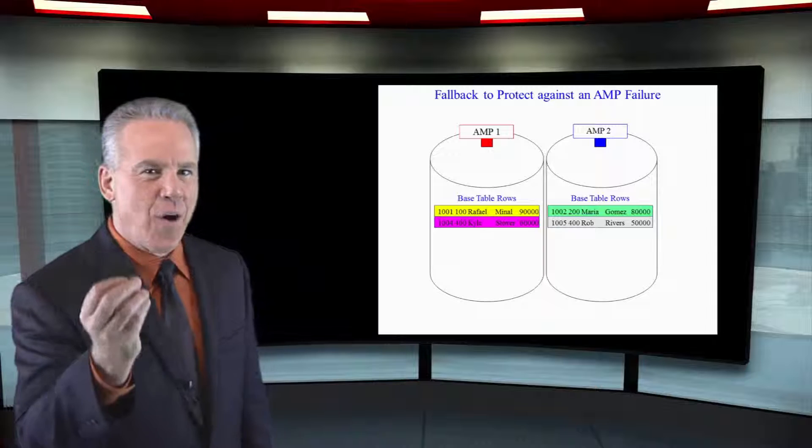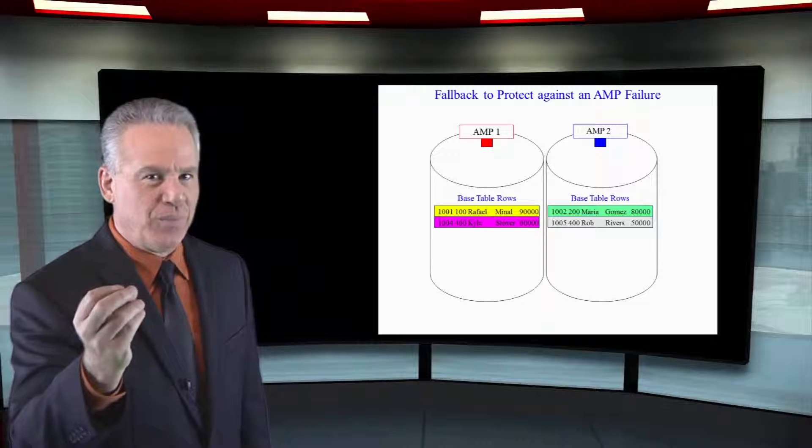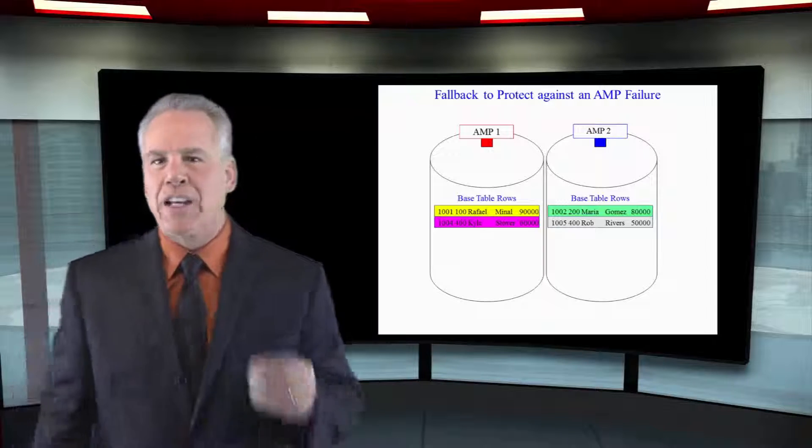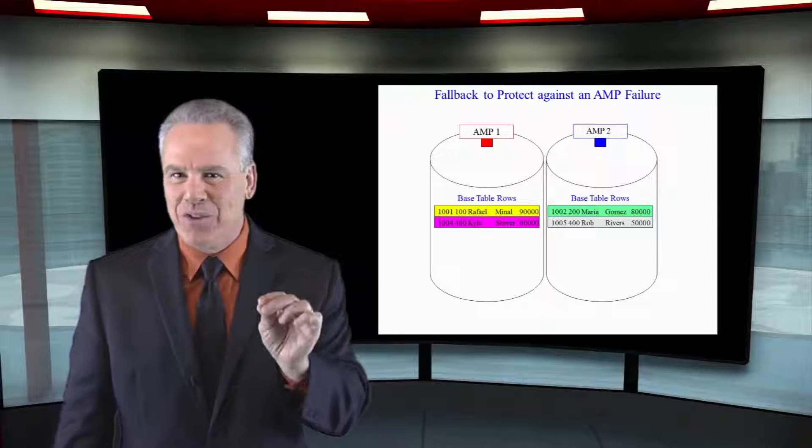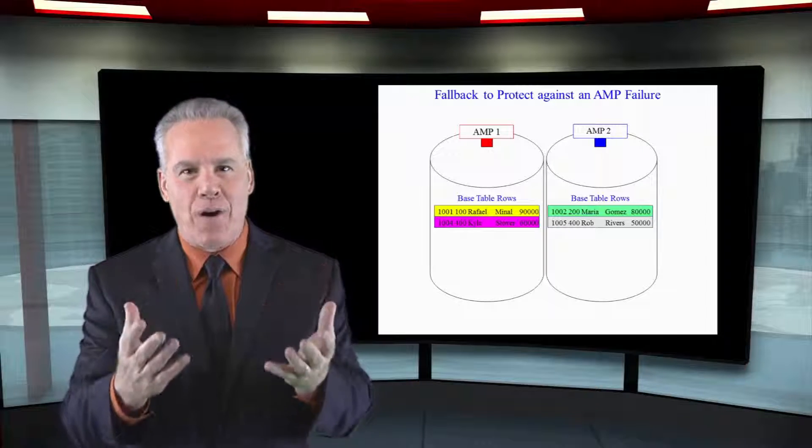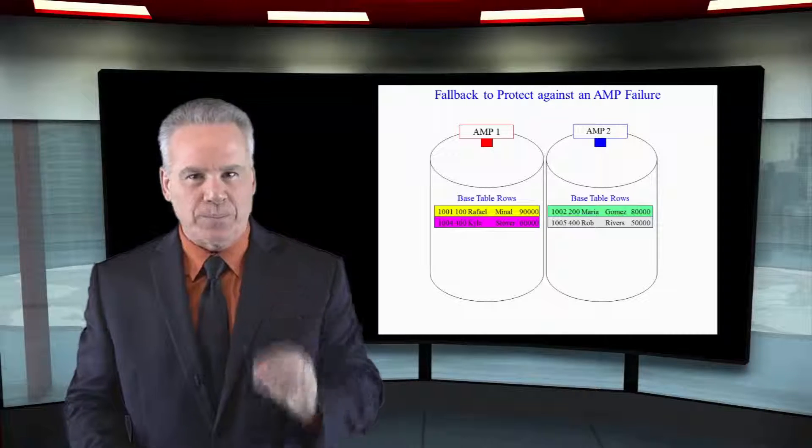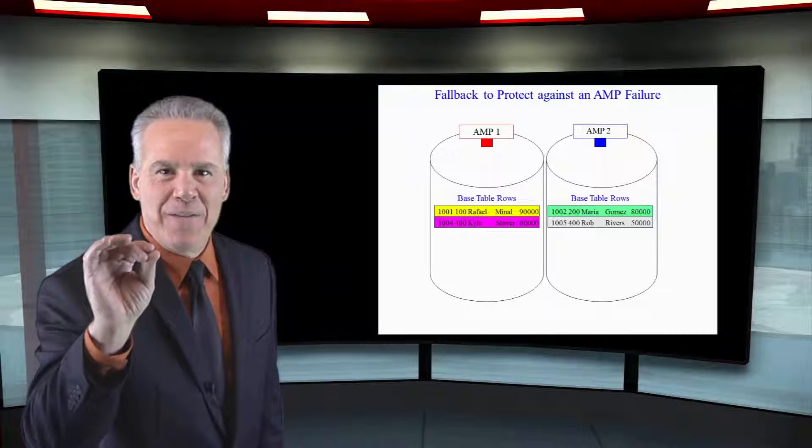Now, Teradata has a fallback feature. If you want rows extra protected, this is not automatic. You actually have to create a table and say I want fallback. Fallback will protect you if an AMP fails.